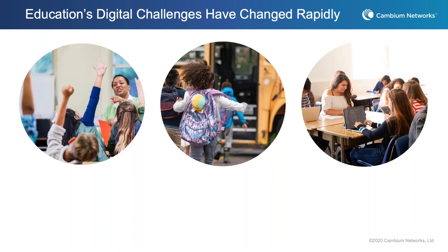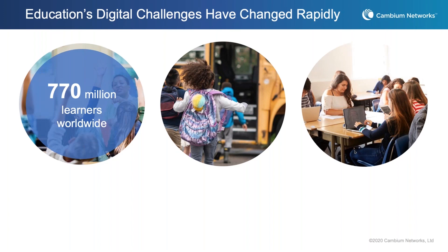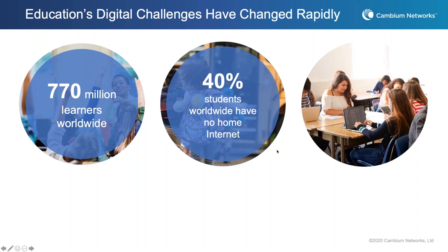A couple of numbers to set the stage in terms of where we are today. Education challenges have rapidly changed over just the last few weeks. Looking at the worldwide population, there are over three-quarters of a billion learners or students worldwide who need to access content, oftentimes online, given that many schools are shutting down. Nearly 40% of students worldwide have no internet at home — in the United States this number is 18%, and in some international markets it's well over 50%.